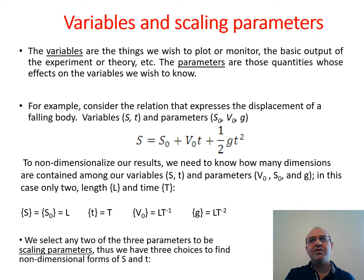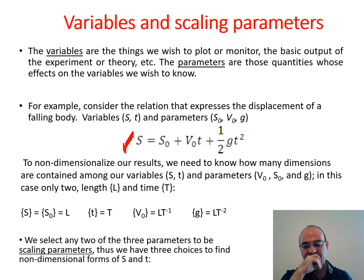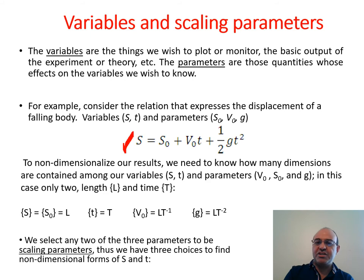Before seeing the official way of performing dimensional analysis, let's look at a simple example: the relation expressing the displacement of a falling body. The displacement S equals S₀ (the initial position) plus V₀ (the initial velocity) times T, plus one-half G (the gravitational acceleration) times T squared. This is the dimensional equation that expresses the displacement.